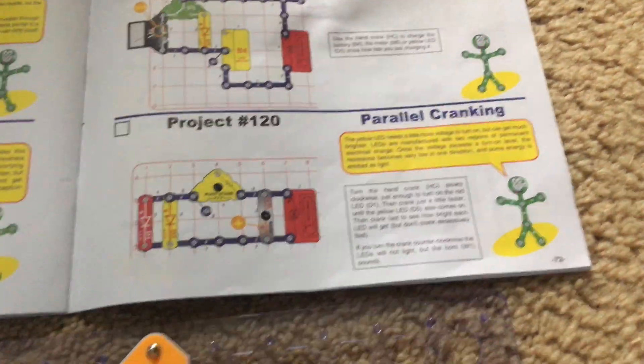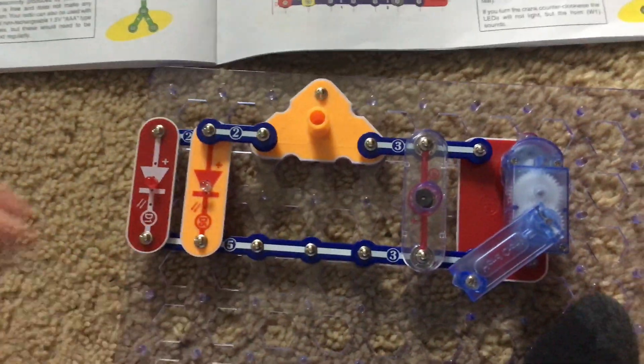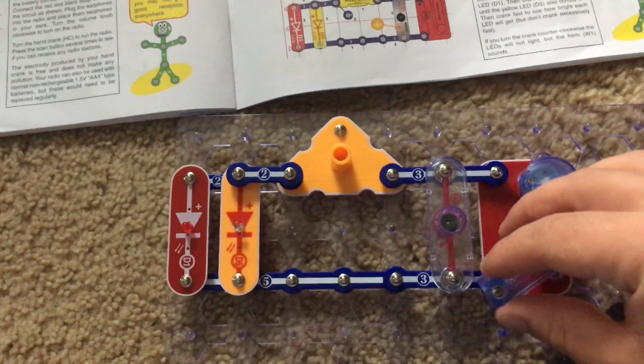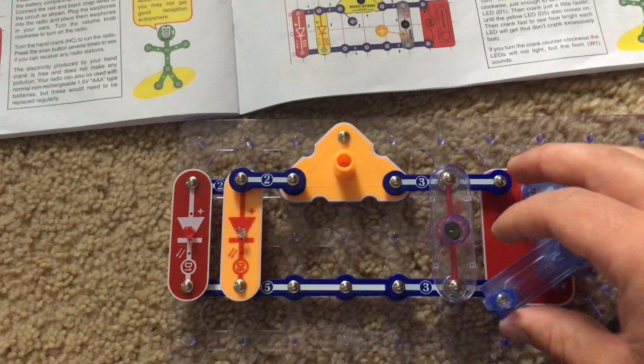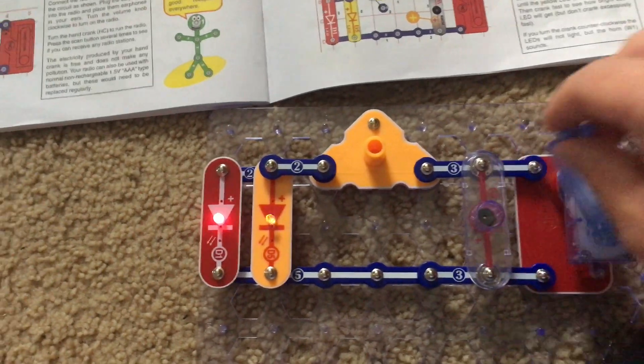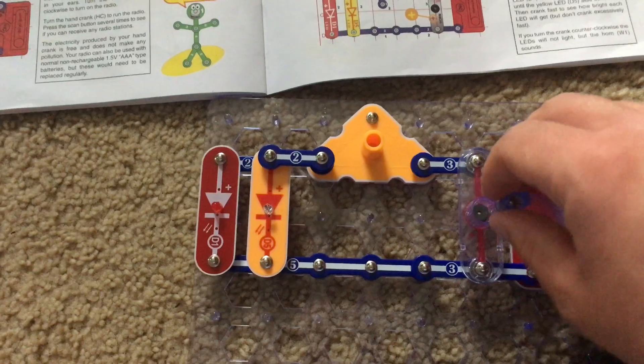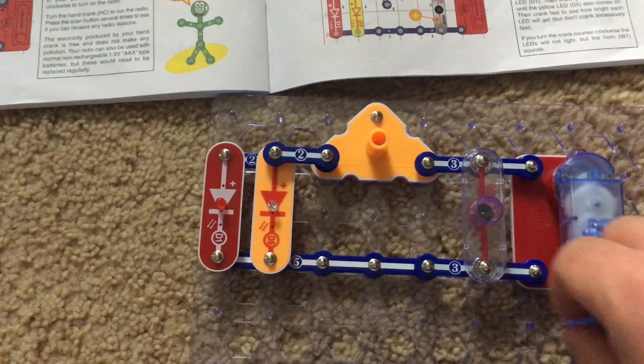Project 120 is parallel cranking. First, turn the hand crank very slowly in a clockwise direction, just so that the red LED comes on.